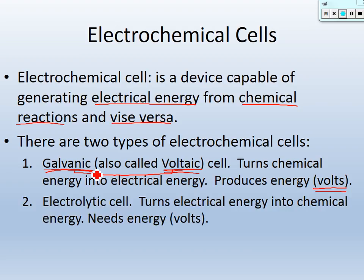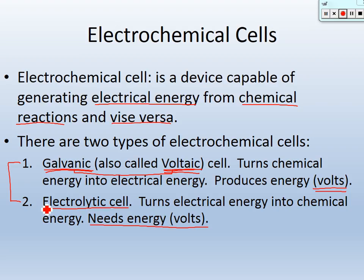The second type of electrochemical cell is called an electrolytic cell. Electrolytic cells turn electrical energy into chemical energy — it's just the opposite of a voltaic cell. With an electrolytic cell, you need electrical energy input; you need some voltage to be input in order to make it work. We're going to make both of these in the lab. A voltaic cell takes chemical energy and produces electrical energy, and an electrolytic cell takes electrical energy and converts it back to chemical energy.